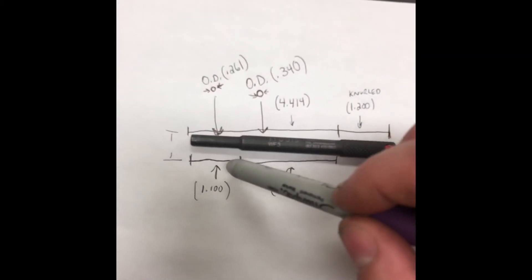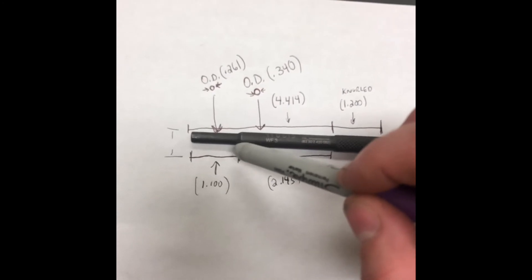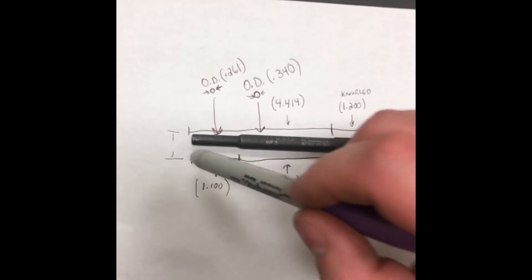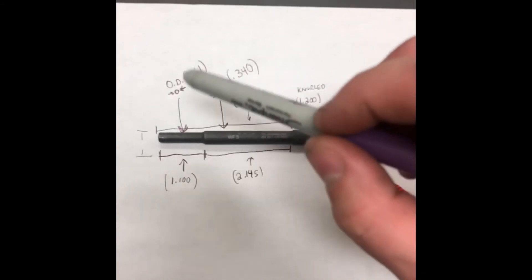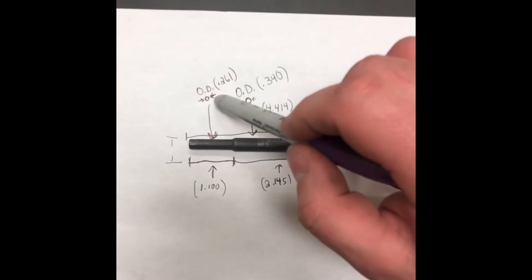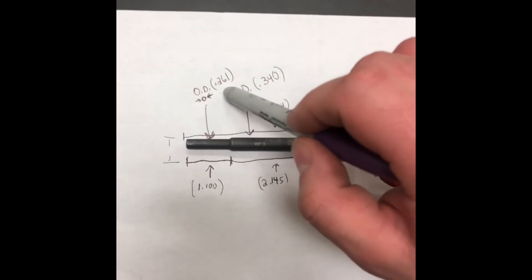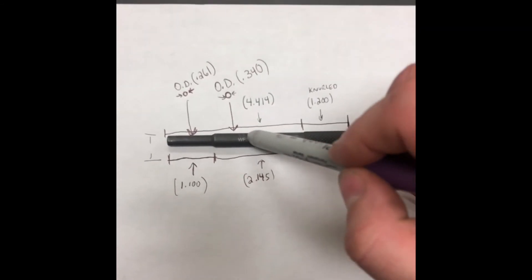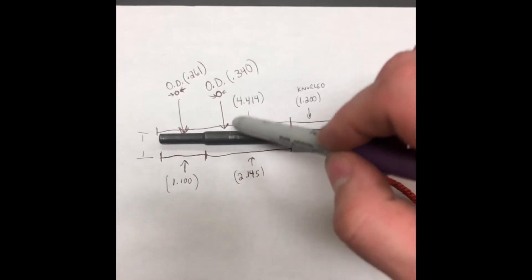From the actual start of the taper to the end of the smaller shaft is 1 and 100 thousandths. The outside diameter of this smaller shaft is 261 thousandths, and then the outside diameter of the larger shaft is 340 thousandths.